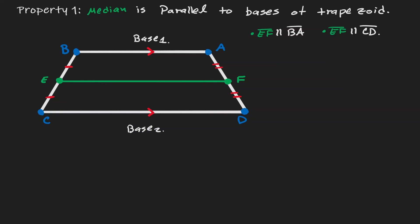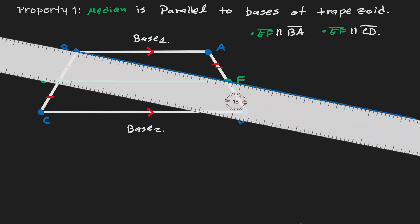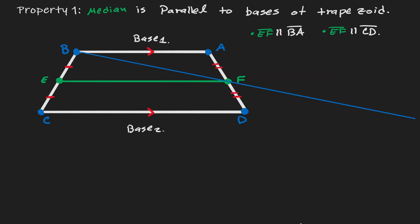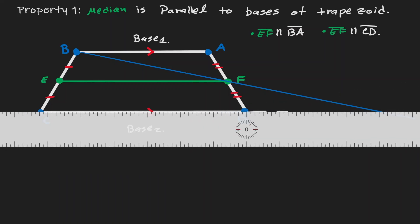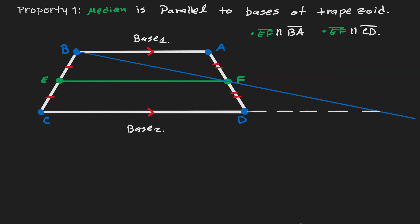Now let's show why this property is true. Let's start by extending a line that connects point B and F, and let's extend the length of the second base. Notice that those two lines intersect at a point — let's call that point R. By introducing this line, we have created two triangles: triangle BAF and triangle FDR.